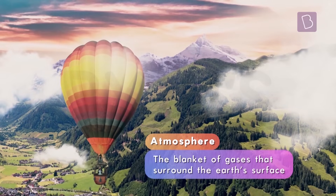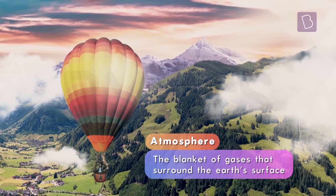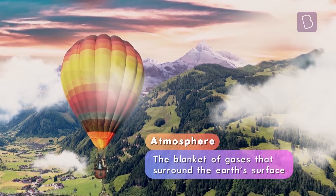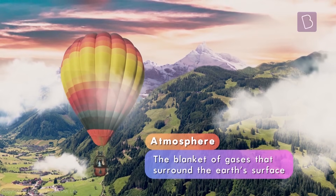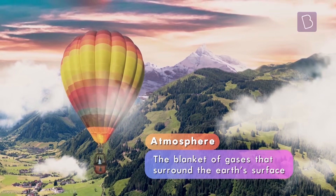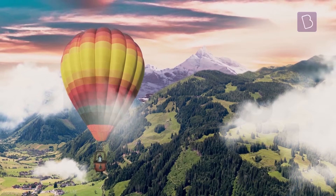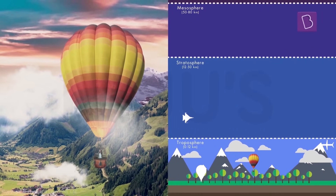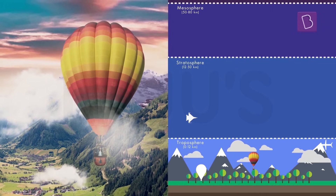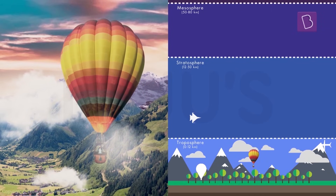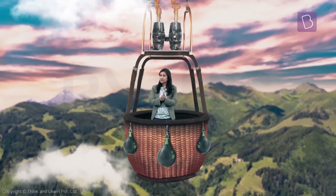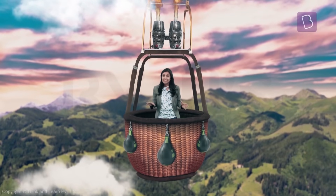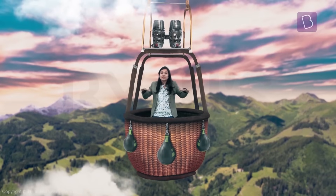Much like a blanket that you snuggle under to feel nice and warm, the Earth's blanket also has a role to play in keeping the Earth's temperature in place. This blanket — the Earth's atmosphere — has many, many gases in it that are necessary for us to be alive.